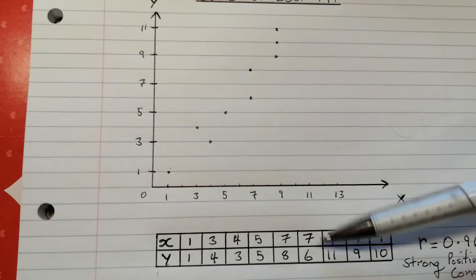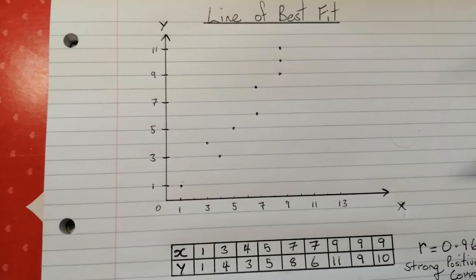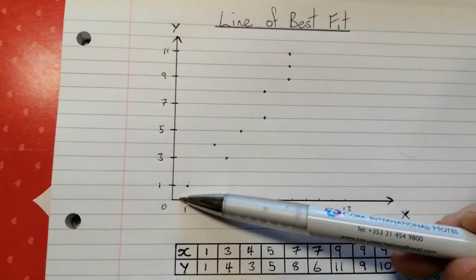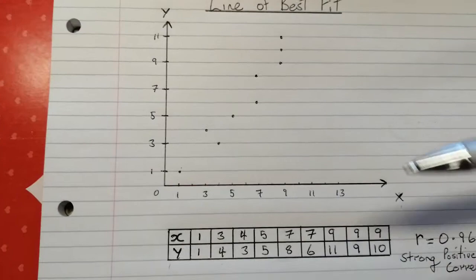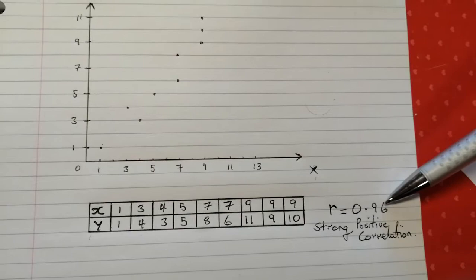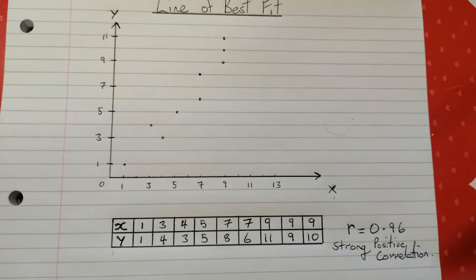It's based on this data in the table under here. These are x values and y values. I didn't assign any particular meaning to them, so they're just values. Looking at the graph here you can see it's definitely a positive correlation between the variable x and the variable y, and having calculated the correlation coefficient to be 0.96, that means it's a strong positive correlation.